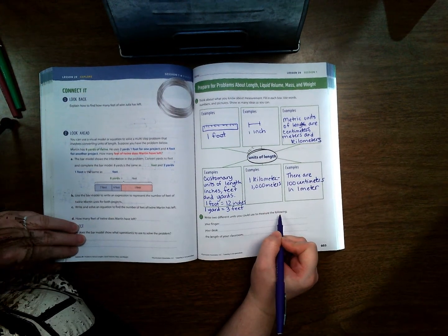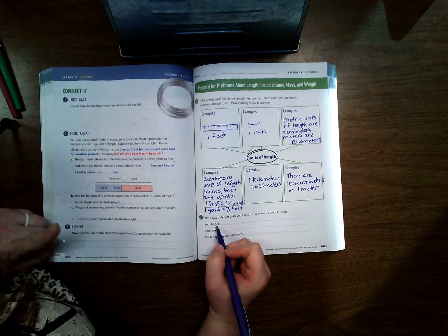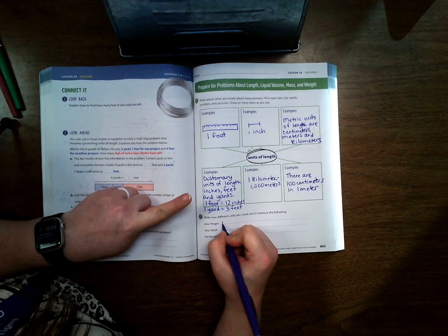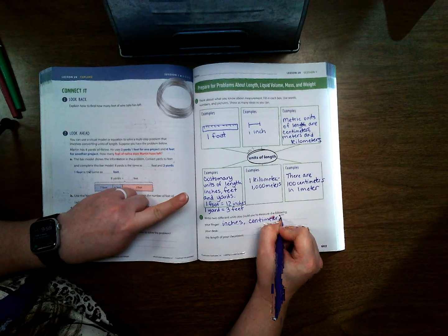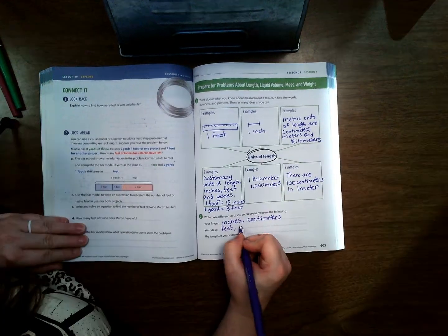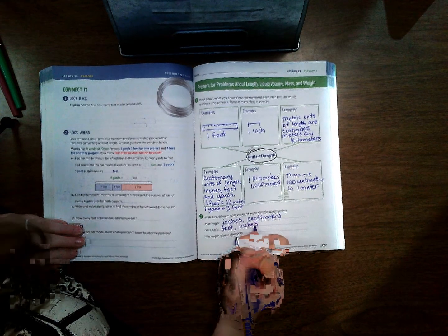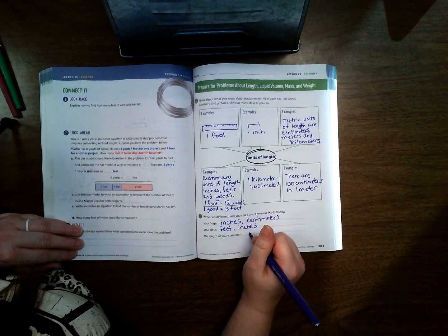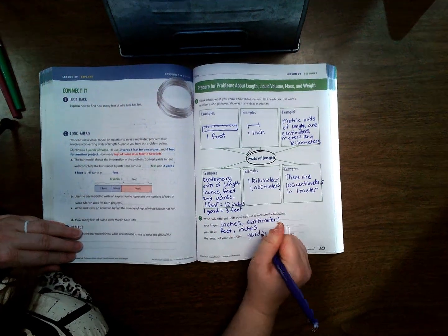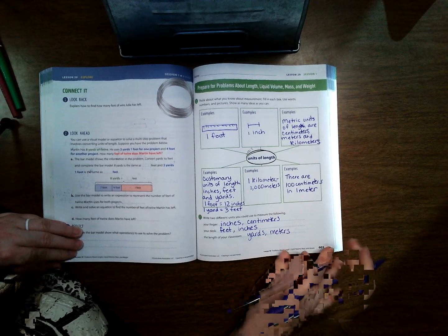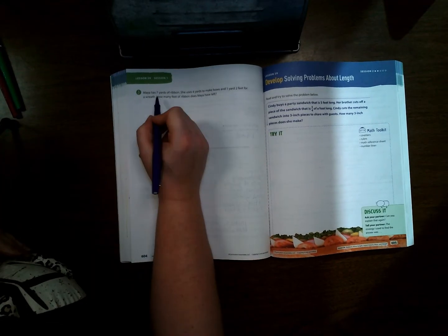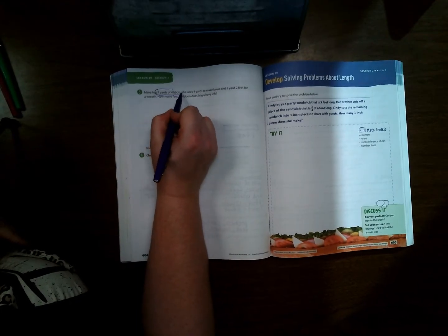Okay, write two different units you could use to measure the following. So your finger, you could use to measure with probably inches and centimeters. Your desk, probably feet and probably inches. The length of your classroom, I would say yards, and something we're not as familiar with is meters, but meters would be a good way to measure it too because it would be quicker than feet. But around here we probably would use feet.